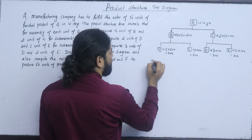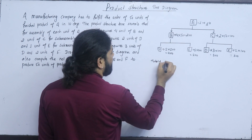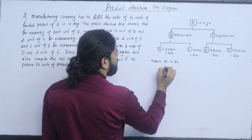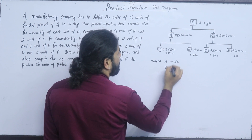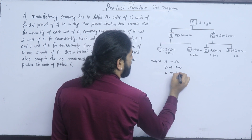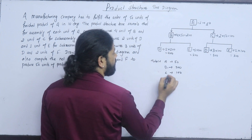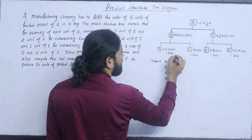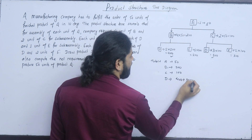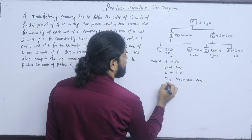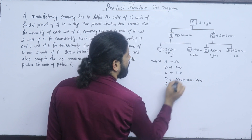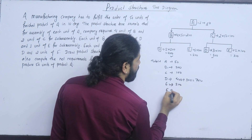If we want to make the total: if A makes 100 units, then B can make 200, C can make 100. For D, combining requirements from B and C — 4 and 3 — that means we need to make 700 units of D. E can make 200, and F can make 200.